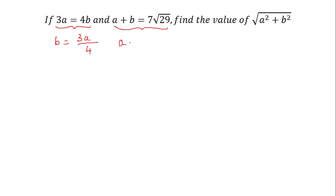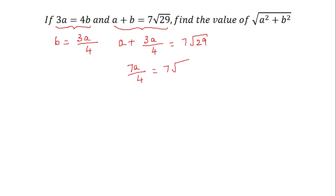We have a plus, instead of b it is 3a by 4, so a plus 3a by 4 is equal to 7 root 29. Taking LCM, we get 7a by 4 is equal to 7 root 29. The 7s cancel, giving us a is equal to 4 root 29.